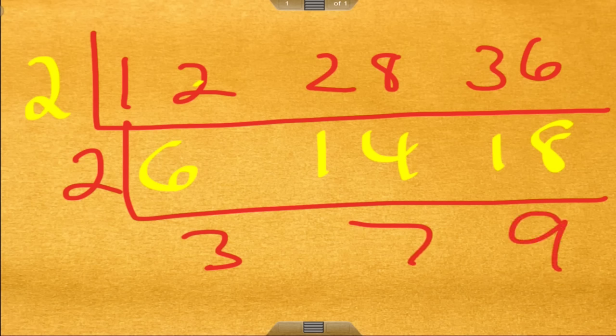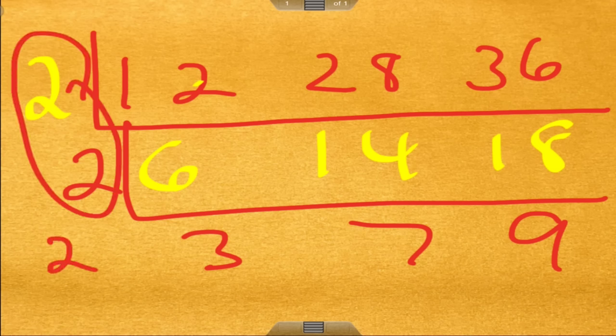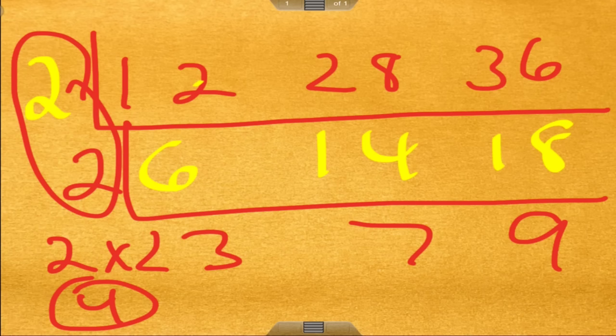And I look at these three, and I say to myself, can anything else go into 3, 7, or 9? Nope, so it's 2 and 2, and 2 times 2 is 4, so the answer would be 4. So the greatest common factor of 12, 28, and 36 is 4.